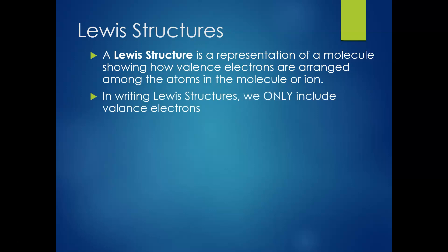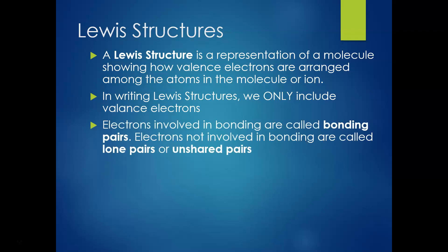When writing Lewis structures, we only care about and only include the valence electrons. All of the other electrons do not factor into this. Electrons involved in bonding, which we represent by lines, are called bonding pairs because there are two of them. Meanwhile, electrons not involved in bonding are called lone pairs or unshared pairs, because there are going to be two of them and they aren't going to be involved in the bond.